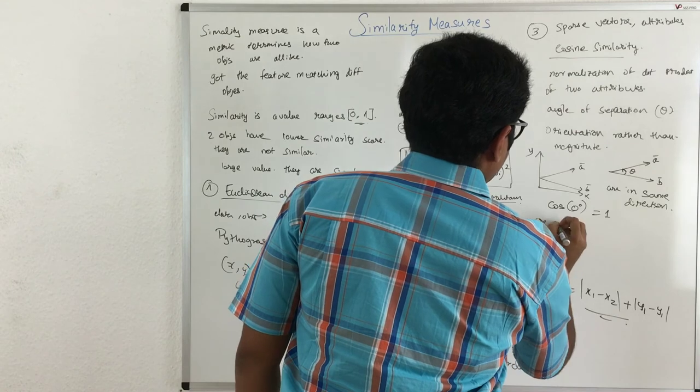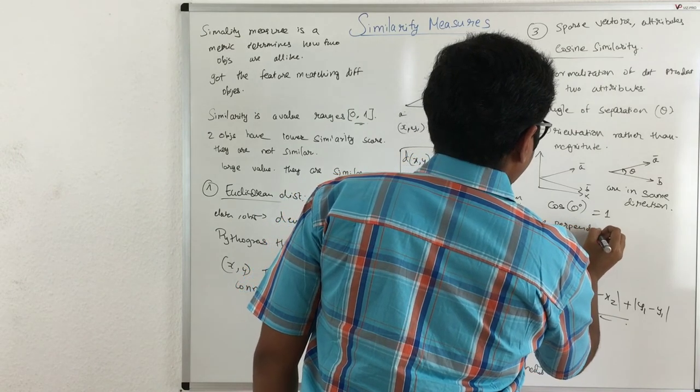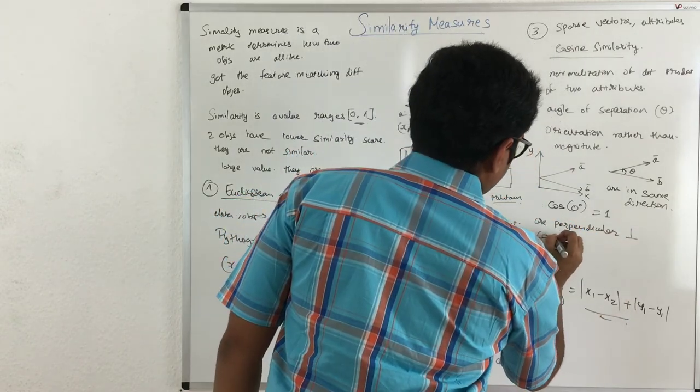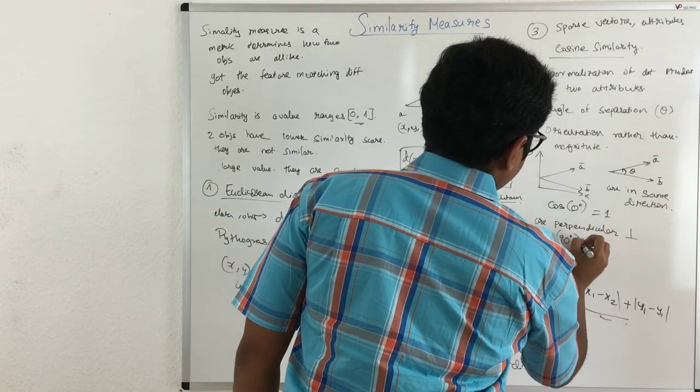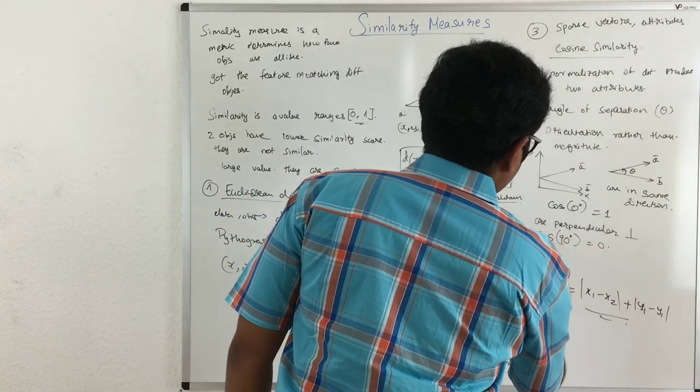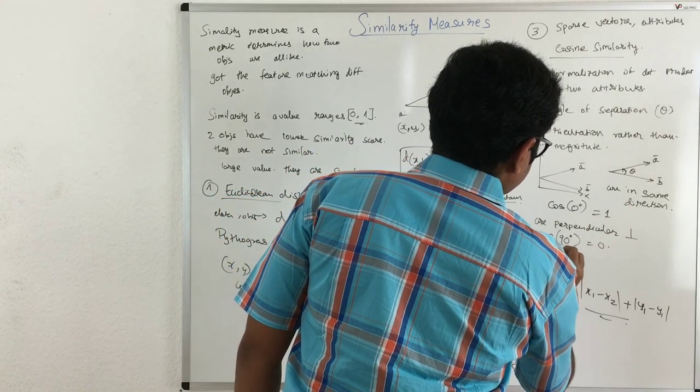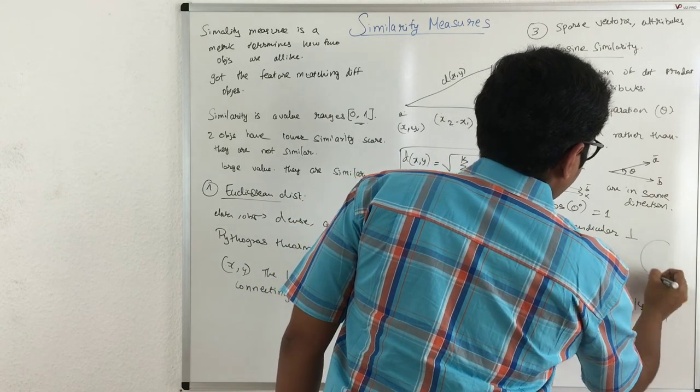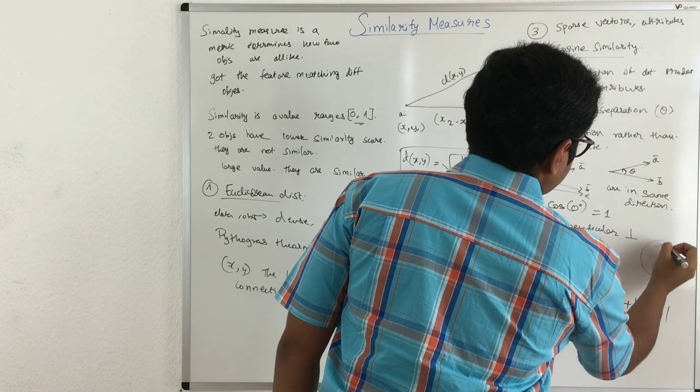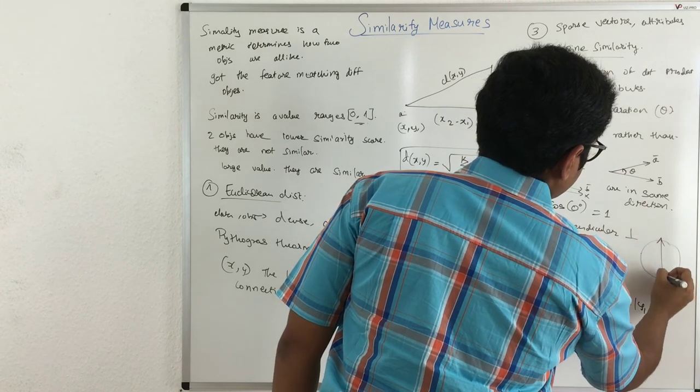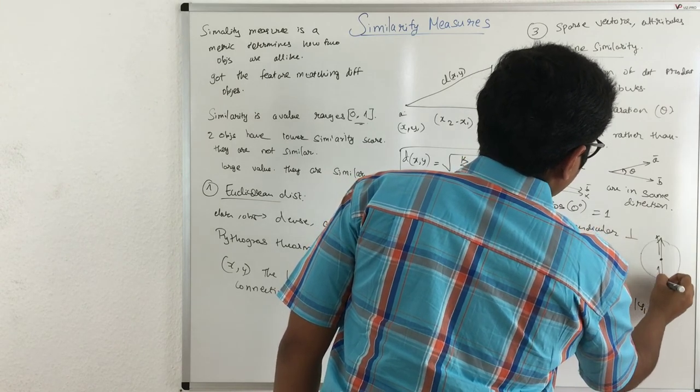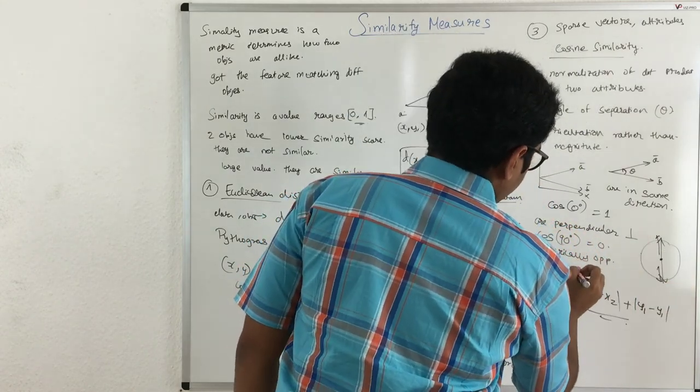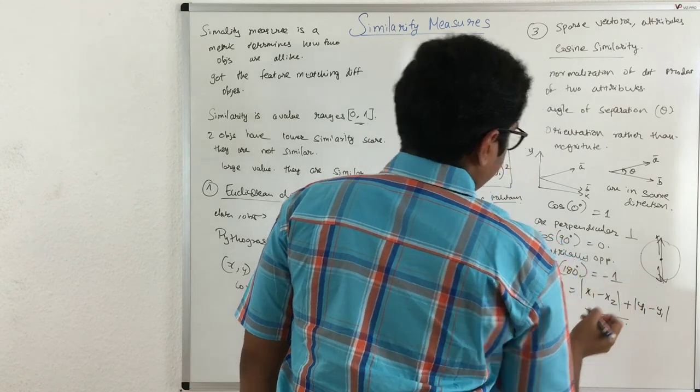If they are perpendicular to each other, so you have the cosine degree of 90 that is zero. Else they are diametrically opposite, something like you have a circle, so if one is towards this direction, other is towards this direction, so it's separated with 180 degree, so it is negative one.